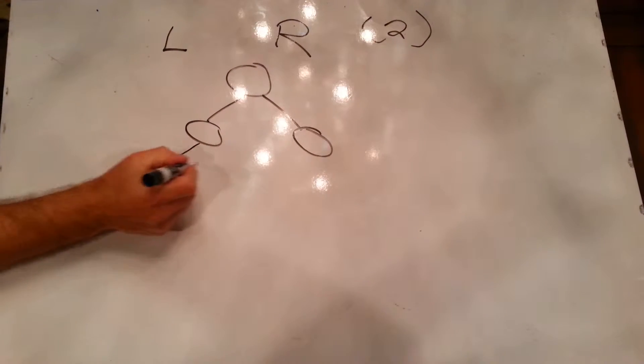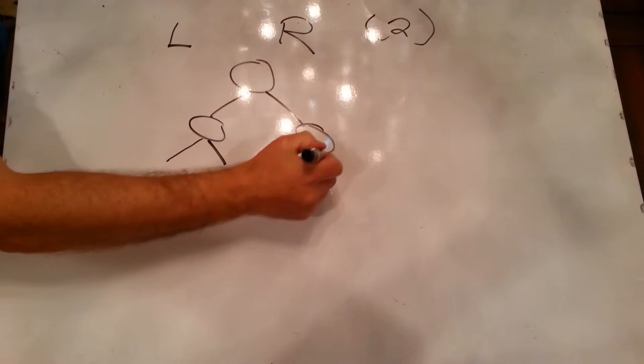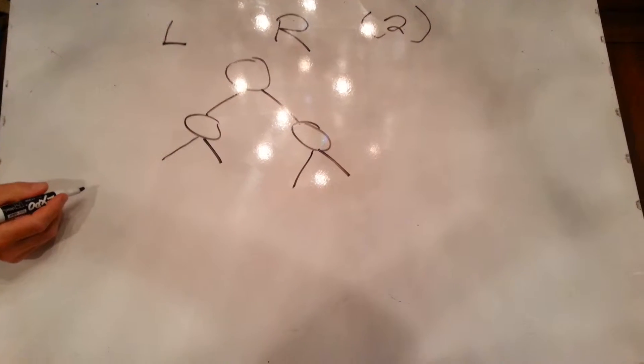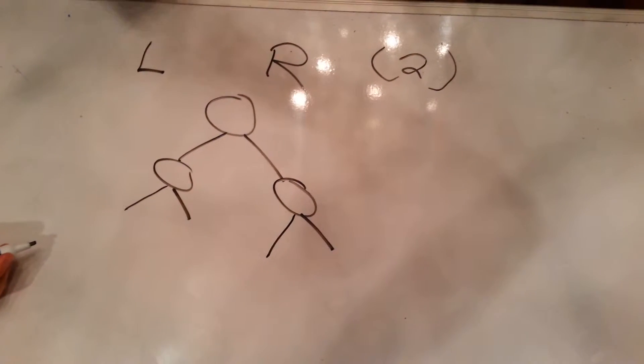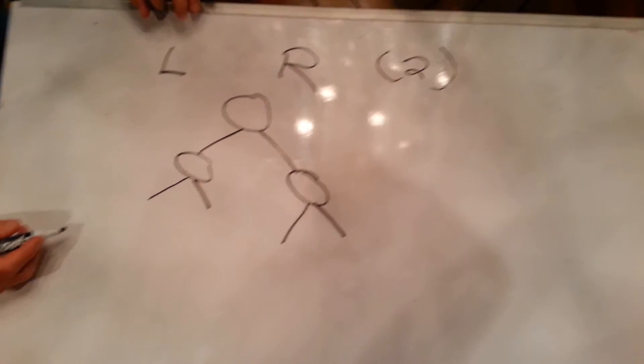Now what will happen is then two new spots are going to open up like this. And the cleanest, easiest way to build a binary is you're always working two positions. No more. You don't want to do three, four, five. You want to work two.